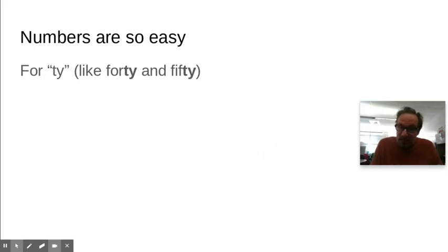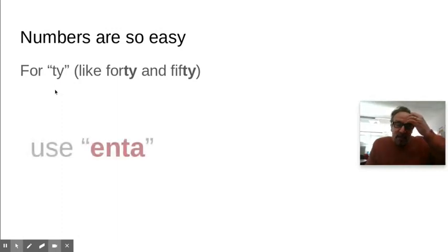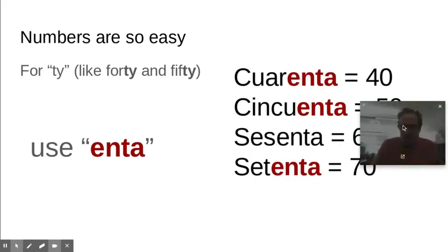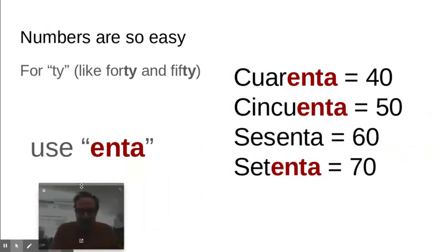A little tip for numbers in Spanish because it's so easy. Facil. The TY in English, like 30, 40, 50, in Spanish is ENTA. So, it's the same thing. Substitute the ENTA. So, it's 40 is cuarenta and 50 is cincuenta and 60 is sesenta and 70 is setenta.